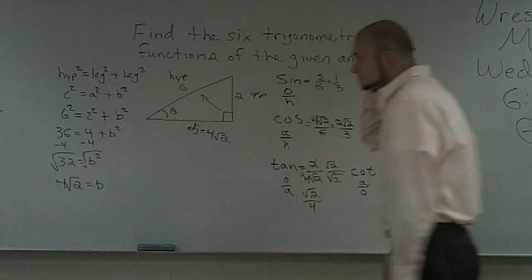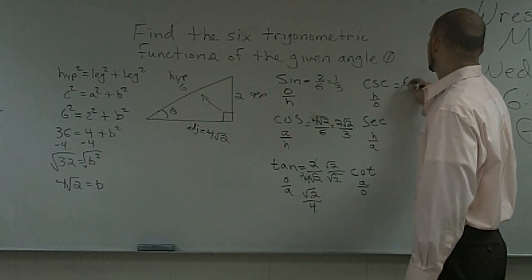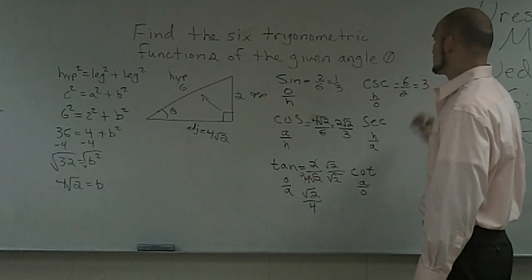My cosecant is going to be hypotenuse over opposite. So it would be 6 over 2, which is 3.